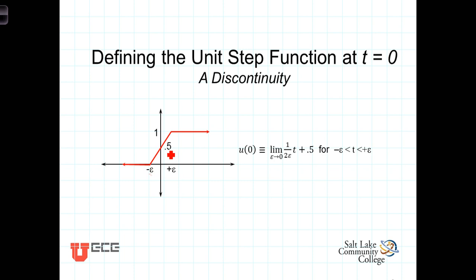You'll notice that the rise, the amount we're changing is one, and the change in the horizontal axis is two epsilon. So, the slope of this line is going to equal the rise one over two epsilon. The y-intercept is 0.5, and so the equation for this line is one over two epsilon t plus 0.5 for the time interval between minus epsilon and plus epsilon.